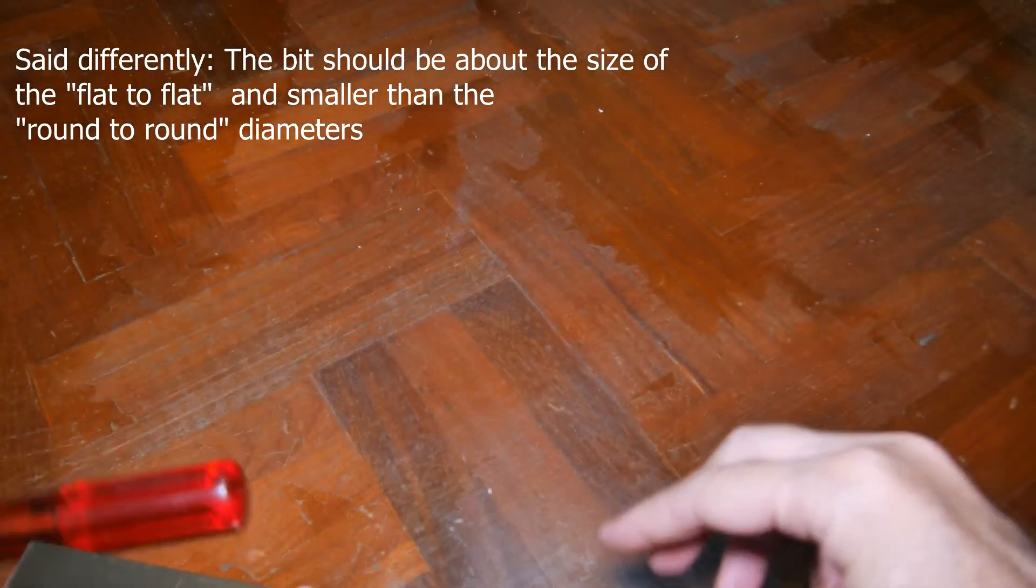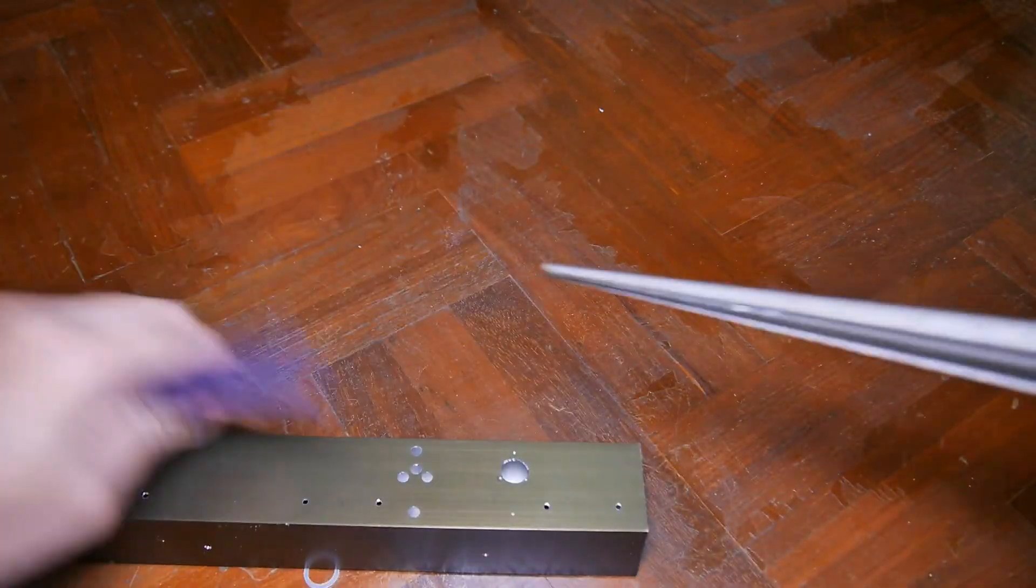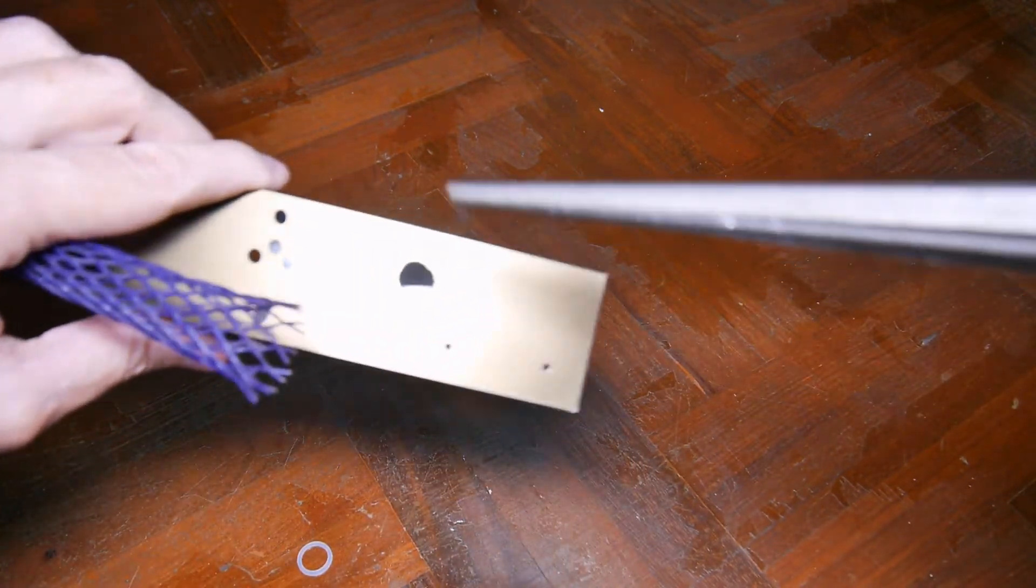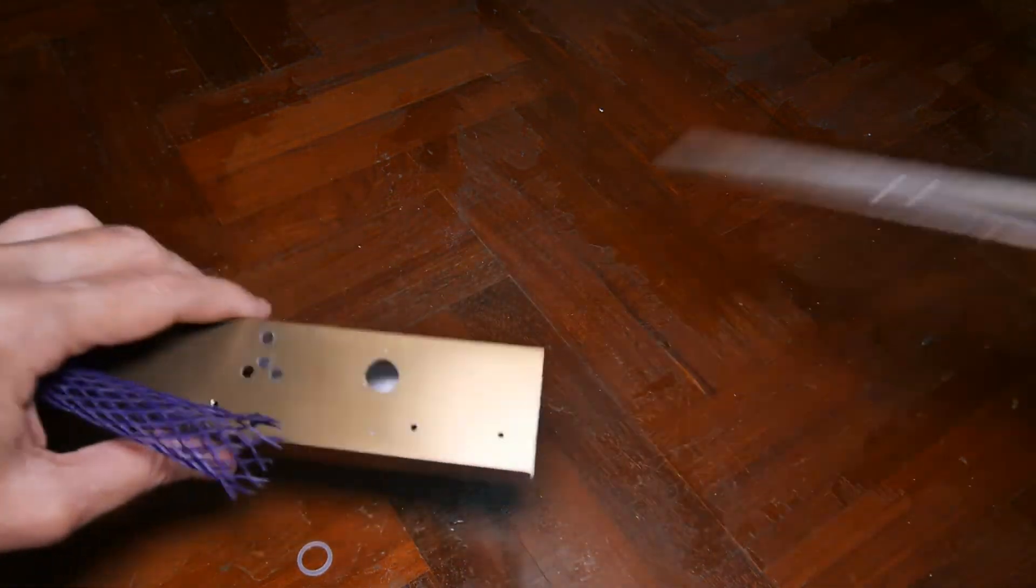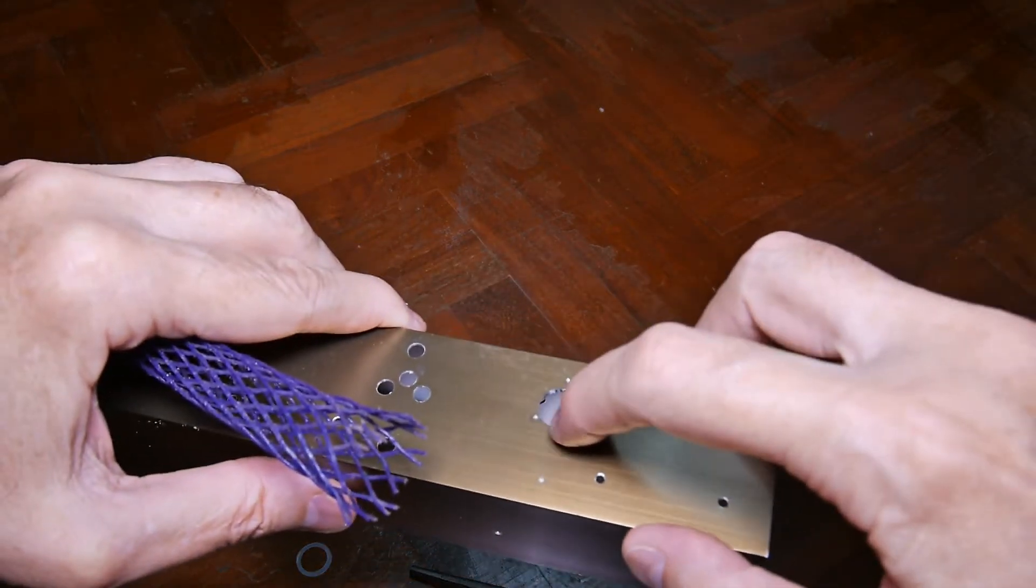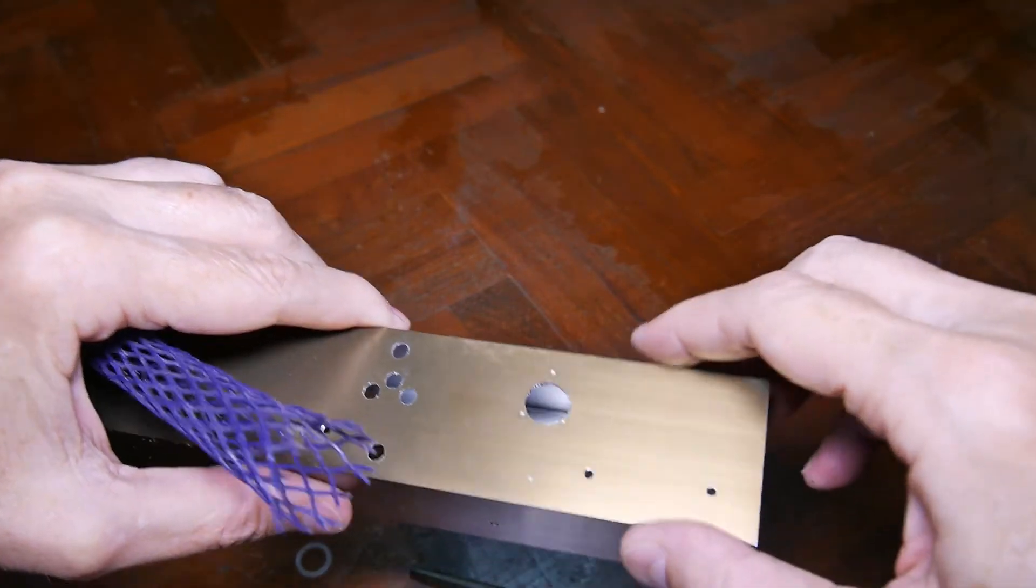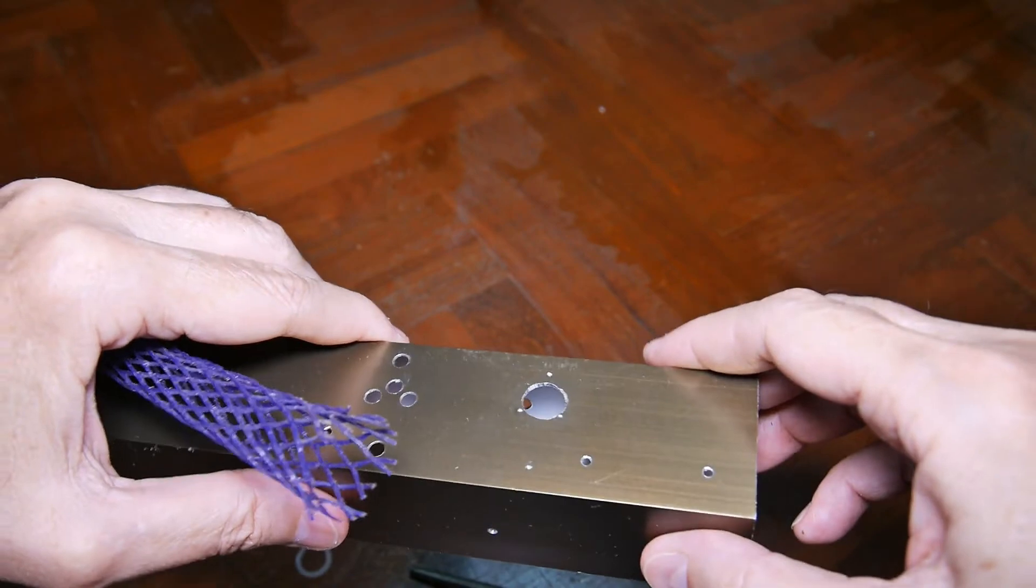The other thing I've used is a reamer that will do the same thing. Drill a smaller hole and then go in and ream it out on each end. You can also drill a small hole, and if you have a Dremel and a grinder, you can grind out each end like that. But again, start with a smaller hole and then grind it out until you have kind of an oval shape.